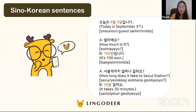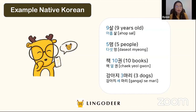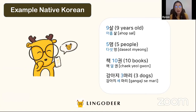Now let's look at Native Korean numbers. Example: 아홉 살, which means nine years old. Since we're talking about age, we have to use Native Korean number 아홉 for nine. 아홉 살.